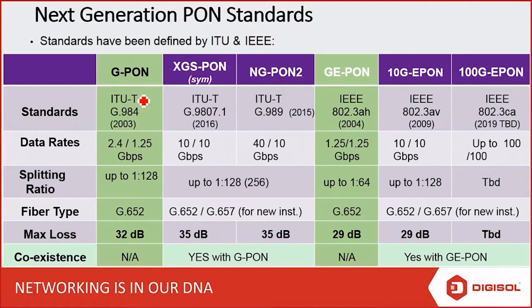Therefore, OLT and ONU for GPON and GE-PON will be different. The reason is that the protocols used in these two different standards are different. In GPON, you have the GEM protocol used. In GE-PON, you have the Ethernet protocol used. Just remember GPON and GE-PON are two different standards in FTTH, and active components for these two standards are different — they are not compatible with each other.